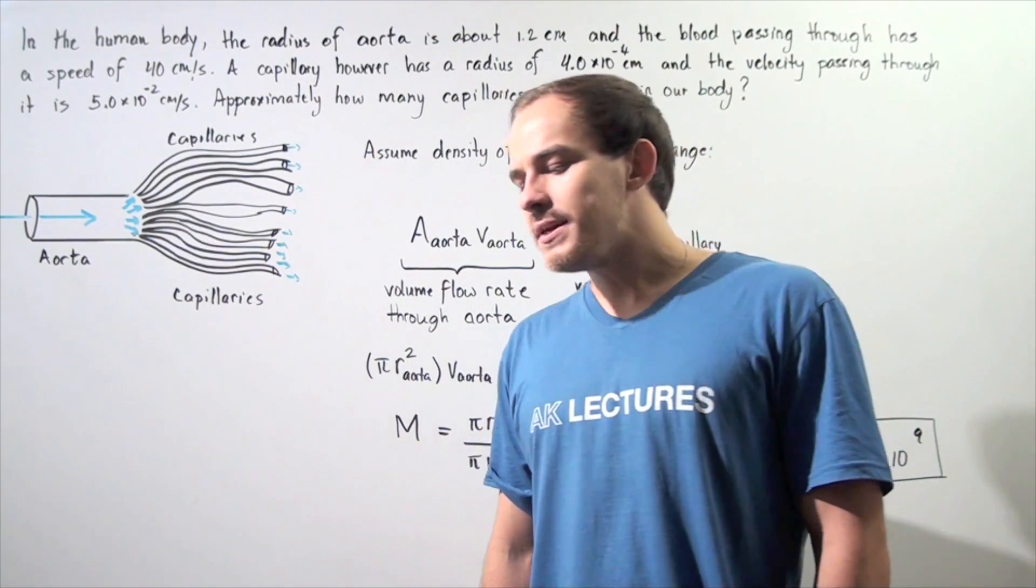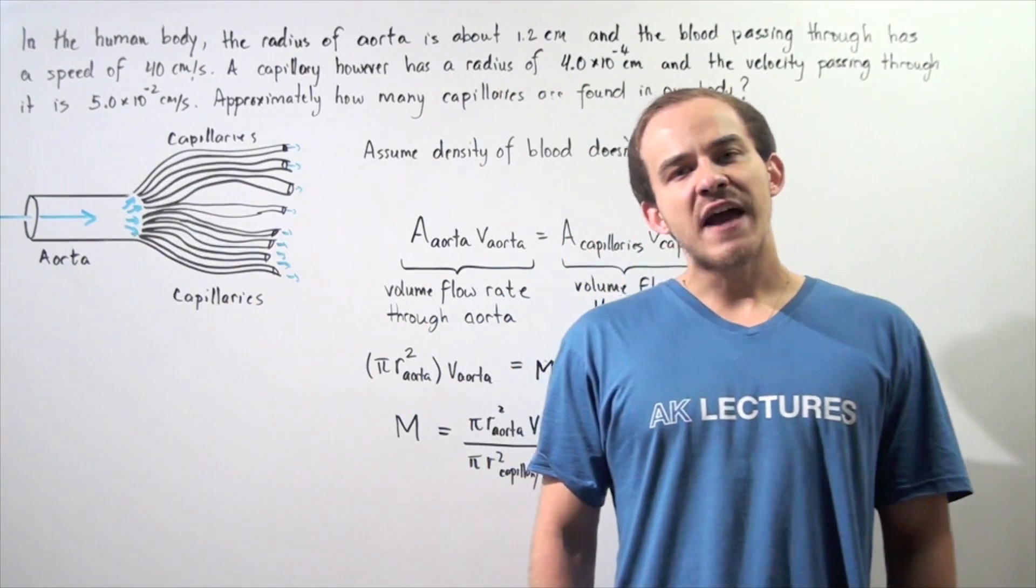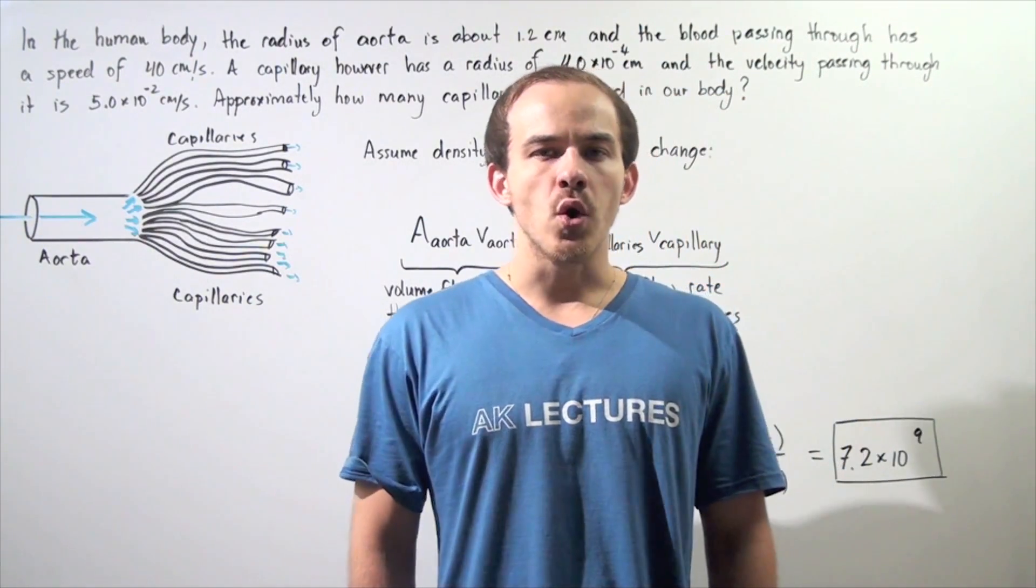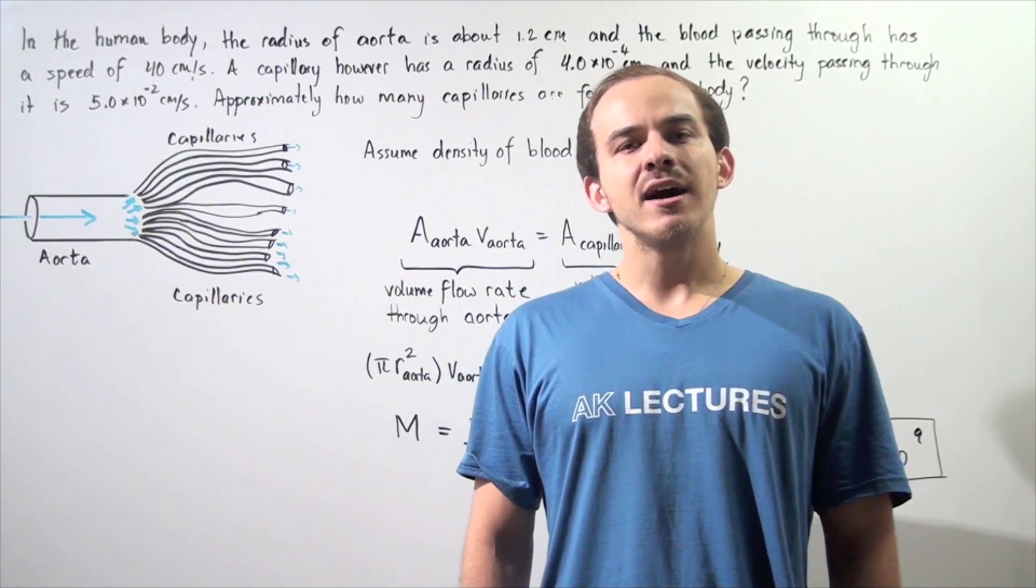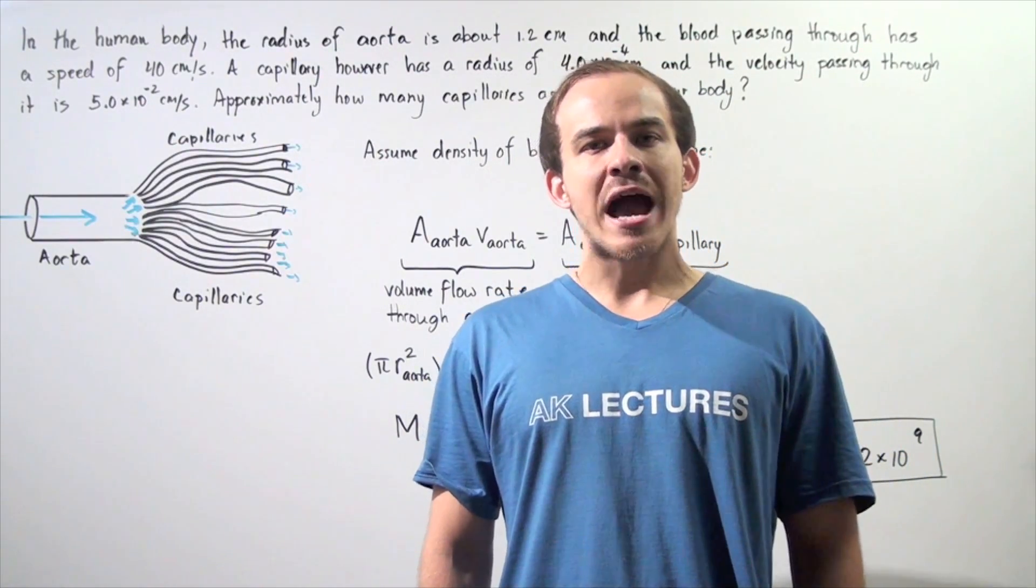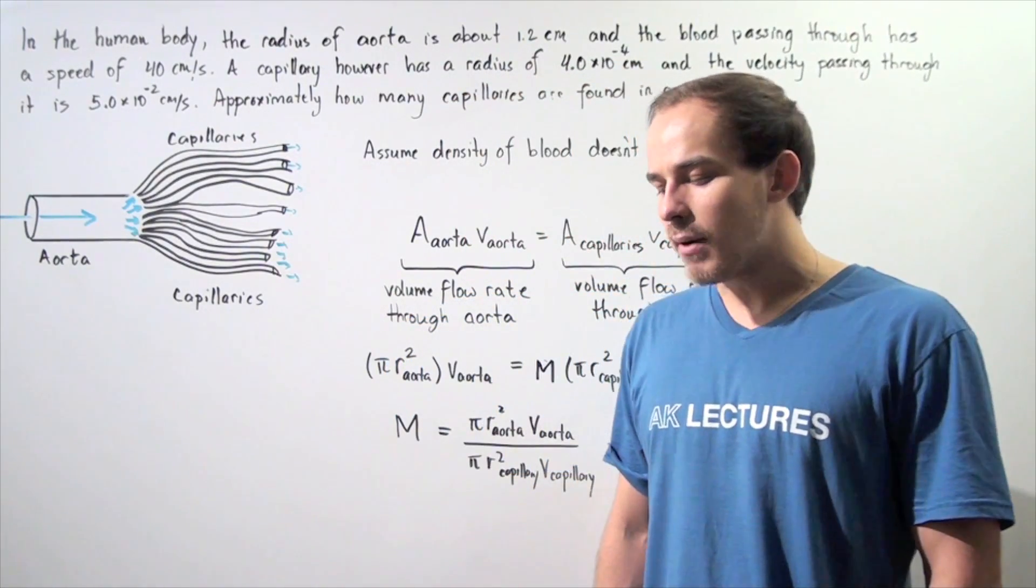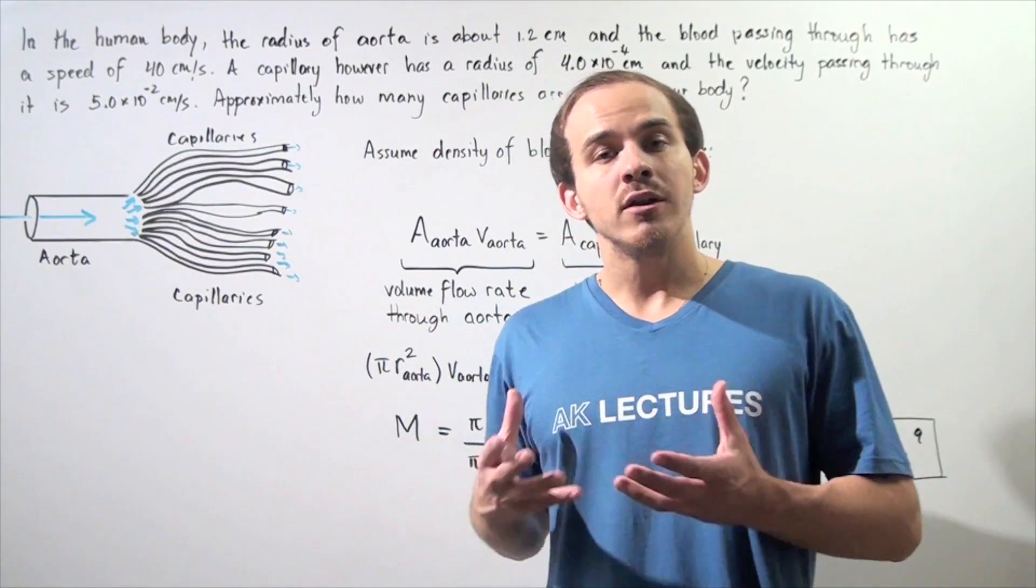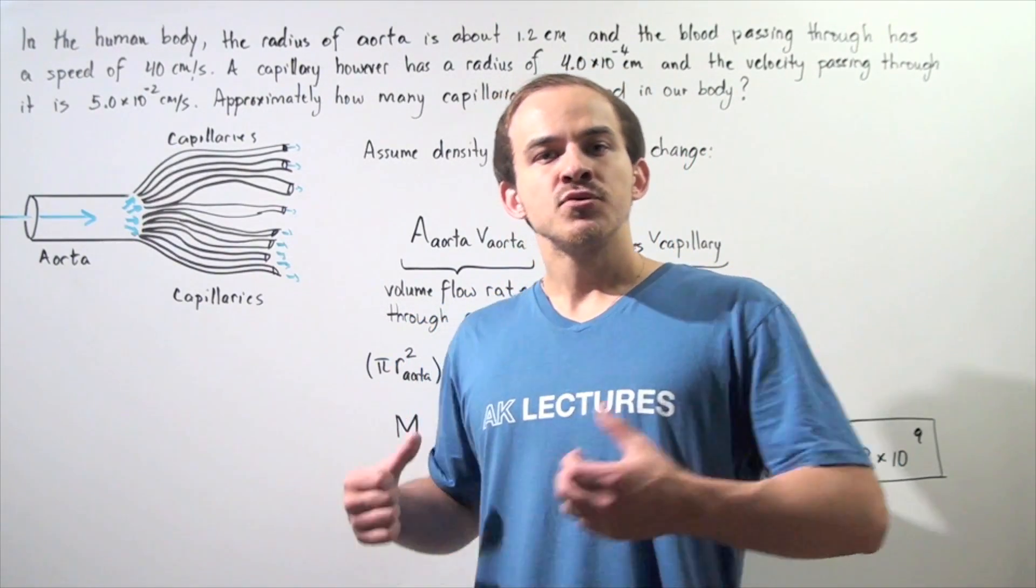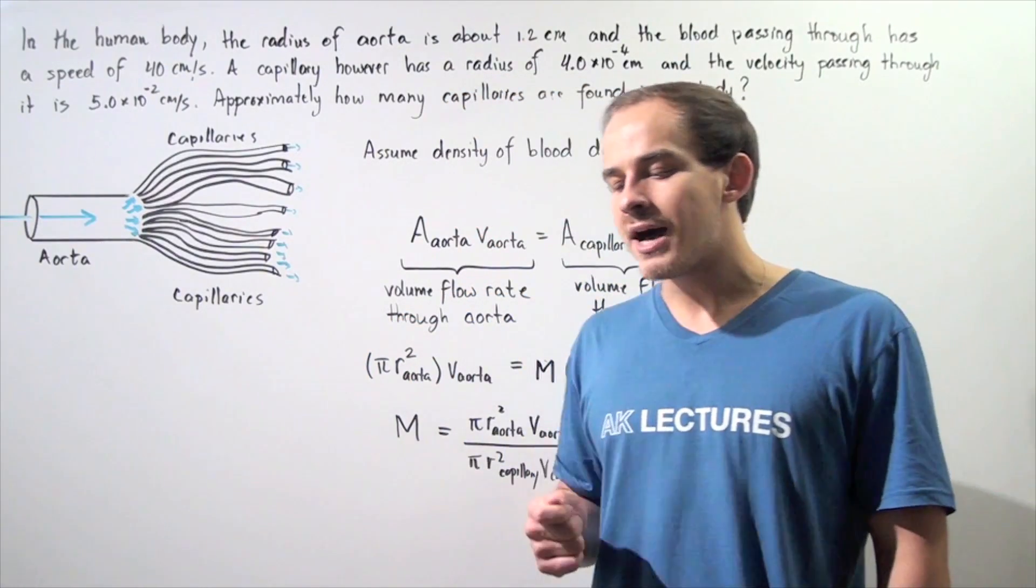Before we begin with the example, let's recall a bit of physiology. The lungs found in our body play the role of oxygenating our blood, and then that oxygenated blood travels to our heart. The heart is an organ found in our body that plays the role of the pump. It pumps all that oxygenated blood to the rest of the tissues and organs found in our body.